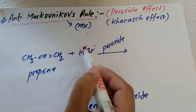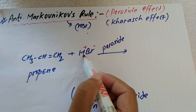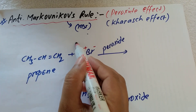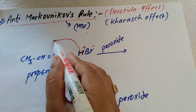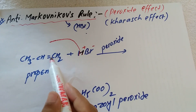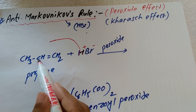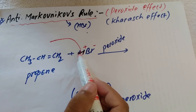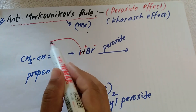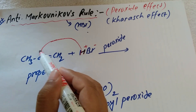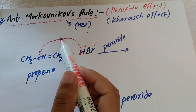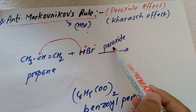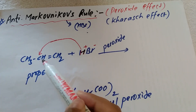The positive part of the unsymmetrical reagent is H+ and the negative part is Br−. This H+ bonds with that double-bonded carbon atom which contains the lower number of hydrogens. This carbon contains only one hydrogen, and this carbon contains two hydrogens. So in anti-Markovnikov's rule, hydrogen bonds with the carbon which contains the lower number of hydrogens — opposite to Markovnikov's rule, where it bonds with the higher.